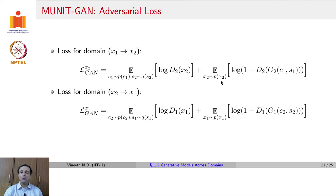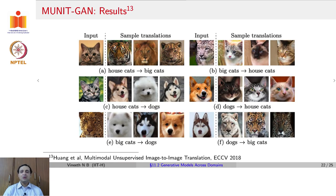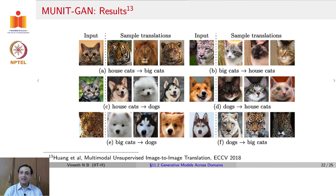In case some of this is hard to follow, going through these equations carefully is recommended. This is an extension of vanilla GAN across two domains with no further complexity. With these loss functions, MUNIT shows impressive results of translations from one domain to another, with more diversity and variety by changing the latent values. Given an input image of cats, if one wants to generate big cats, one can get several translations by playing with the style latent vector of the second domain, yielding several varieties of output.